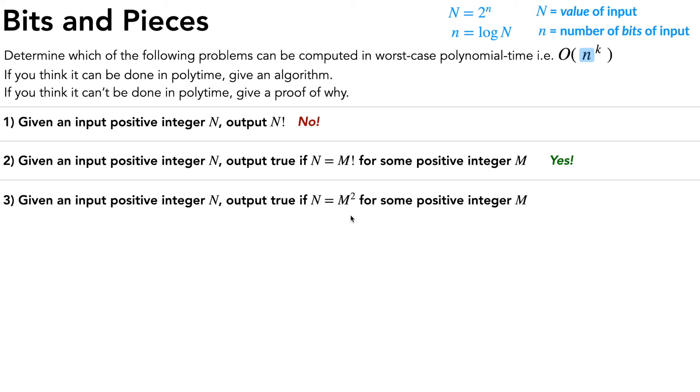So a good starting point might be let's just take the algorithm we had from part 2 and switch out that one line where we're calculating the factorial and instead calculate the square. So this algorithm is going to work and return true and false in the correct cases. The question is, is this algorithm still polytime?